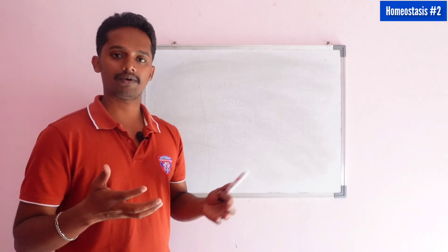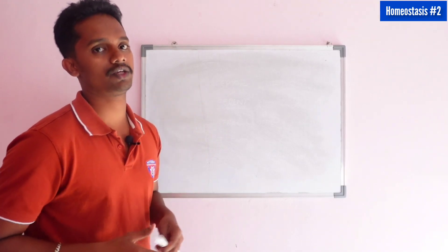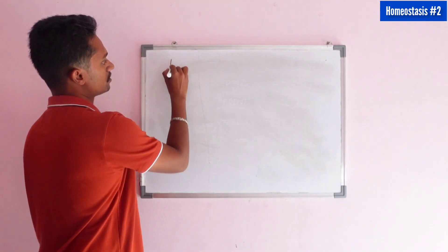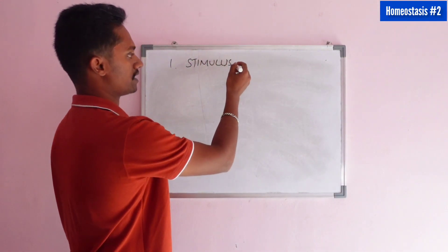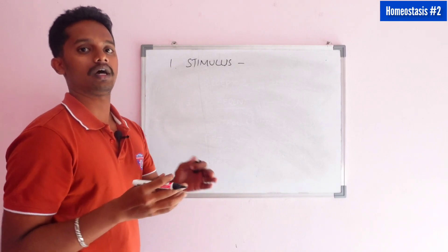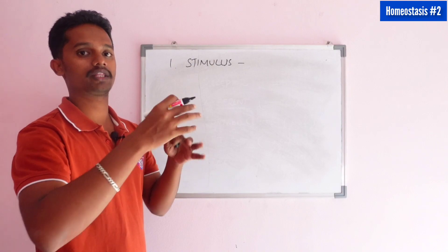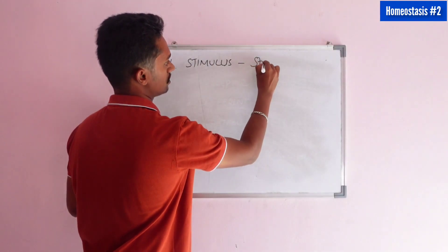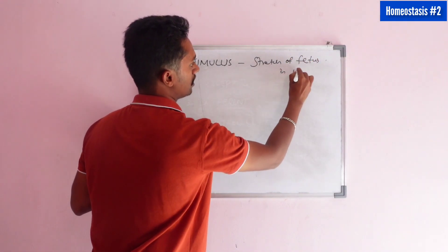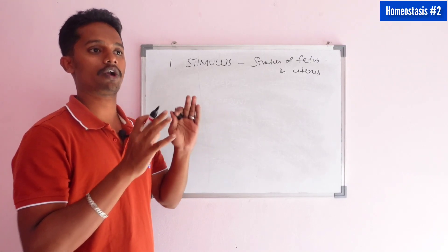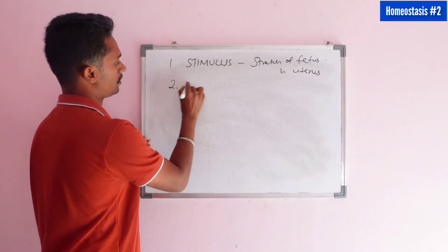One of the primary examples of positive feedback mechanism is childbirth. In childbirth, the first step is the stimulus — the fetus moves and exerts pressure and stretching on the cervix region of the uterus. This stretching is the stimulus.